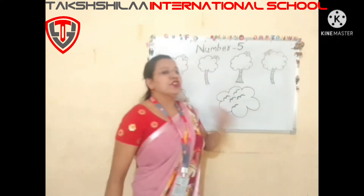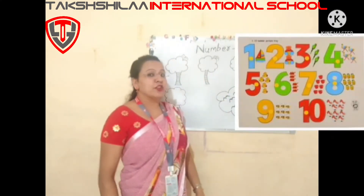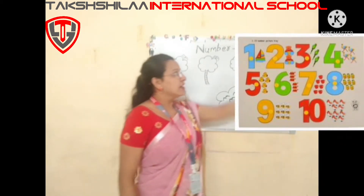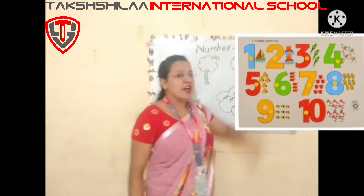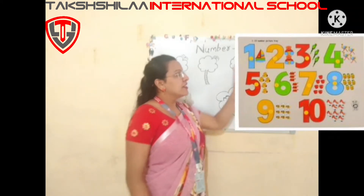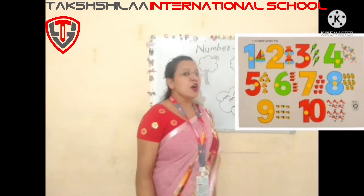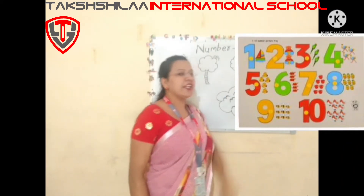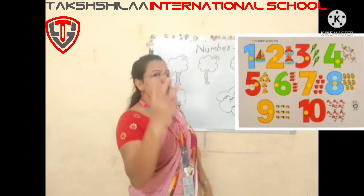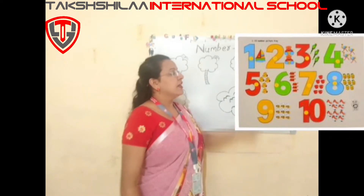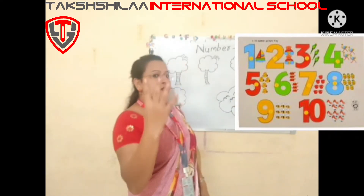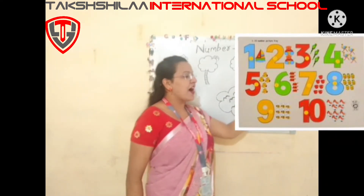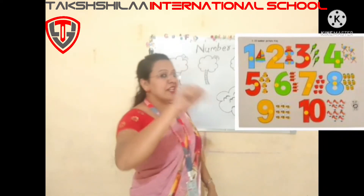This is our number chart, one to ten with objects. You can see here. This is number 1 with 1 object, number 2 with 2 objects, number 3 with 3 objects, number 4 with 4 objects, and number 5 with 5 objects.